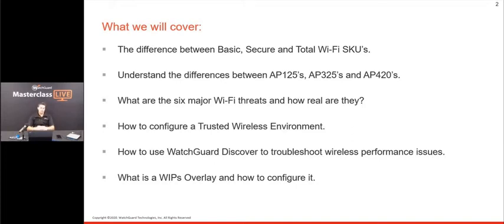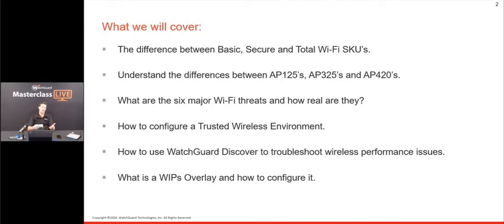We'll also talk about WIPs overlay — the ability to take a WatchGuard AP125 and configure it in a specific mode where it protects other vendors' Wi-Fi networks. For example, if you've already deployed Wi-Fi from another vendor but like WatchGuard's wireless intrusion prevention, you don't have to completely replace your wireless environment. You can use these small access points to augment your current setup and gain that security.